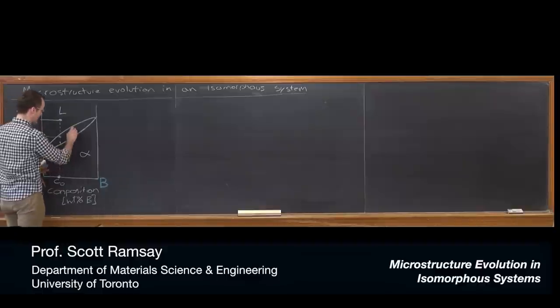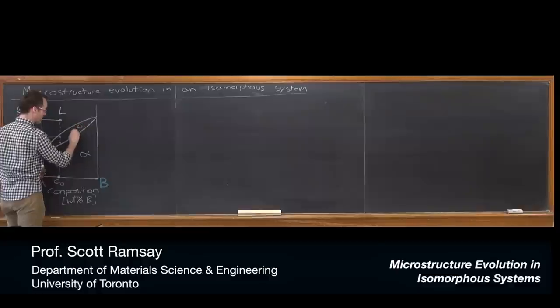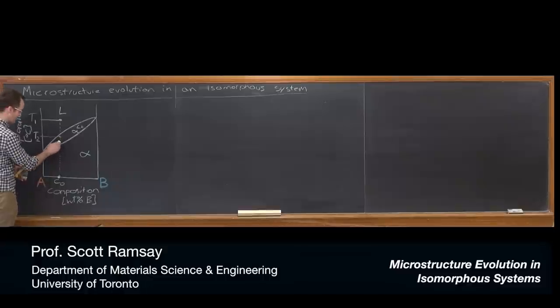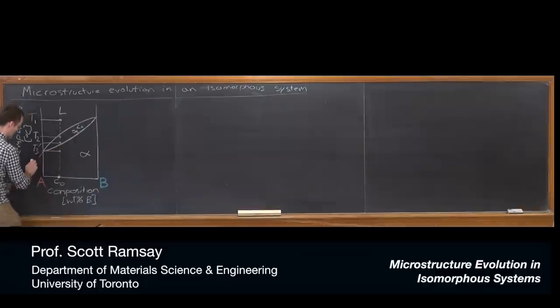And then another temperature still in this two phase region. So this region here is two phase liquid plus alpha. So this third temperature that I want to explore is this temperature T3 just above the solidus. And then let's explore again below the solidus and call that T4. What does the microstructure look like?